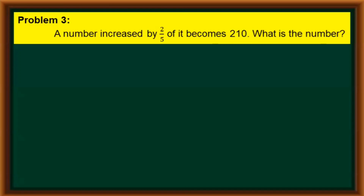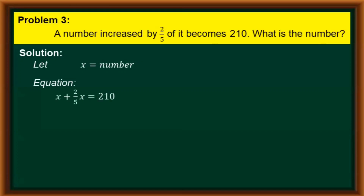Let's proceed to our third problem. A number increased by 2 fifths of it becomes 210. What is the number? We start with our solution. We are looking for a certain number, so we let x be equal to this number. According to the problem, the number x will be added by 2 fifths of x, and the result equals 210. Hence, our equation is x plus (2/5)x equals 210.